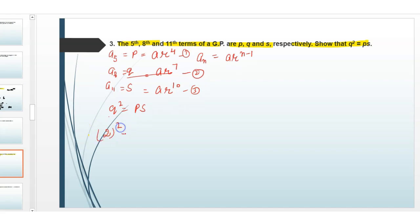So Q is Ar raised to power 7, square equals Ar raised to power 4 into Ar raised to power 10. So A square and Ar, 7 times 2 is 14, equals A into A is A square into Ar raised to power 10 plus 4. So this is hence proof.